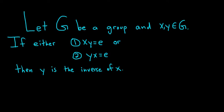Hey YouTube. In this problem we have a group G and x, y, two elements of G. We have to prove that if either: one, x times y is equal to E, which is the identity, or two, y times x is equal to E, then y is the inverse of x.